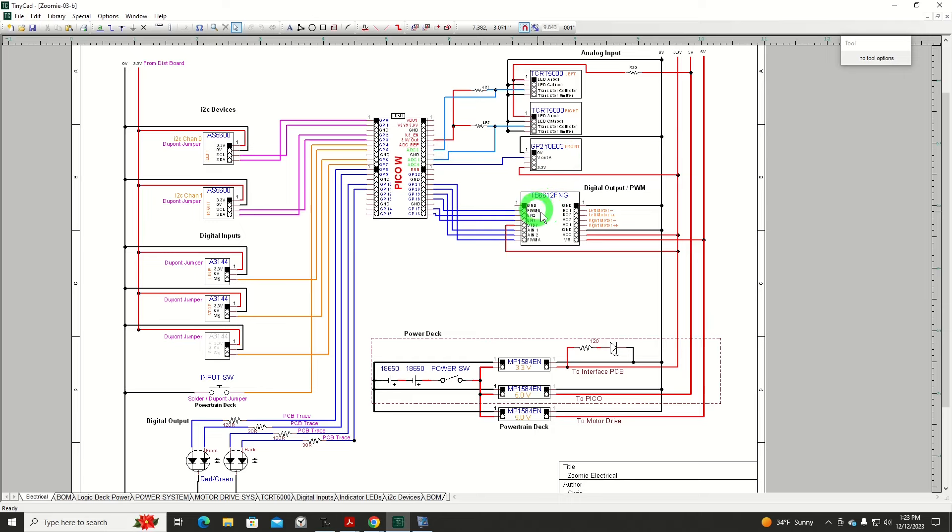And finally, we have our motor drive for the two gear motors, which is a model TB6612FNG. Now, what is not yet covered is the actual PicoW and the power deck. The power deck will be our next short mini-series.